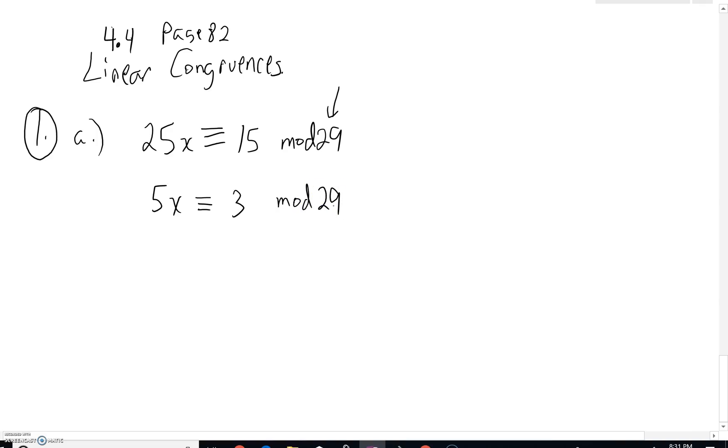As I'm looking at 25x and 15, I'm thinking I can divide by 5 and we can. If we divide by 5 we'll have 5x is going to be congruent to 3, but there is the possibility that the mod would change. Here, thank goodness, we don't have to worry about that being the case. The reason of course is 29 is not divisible by 5.